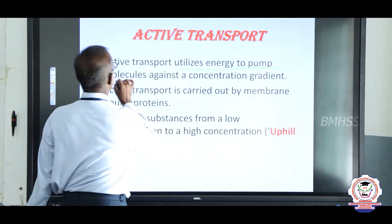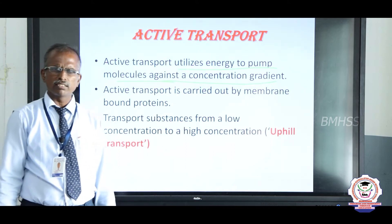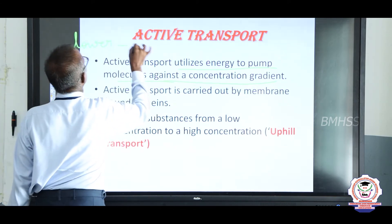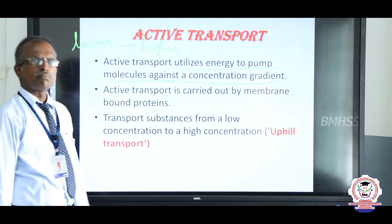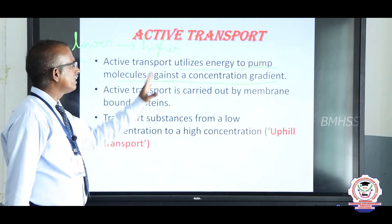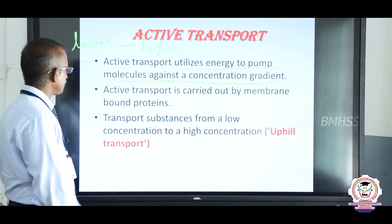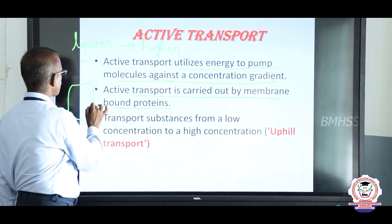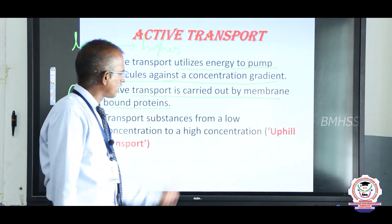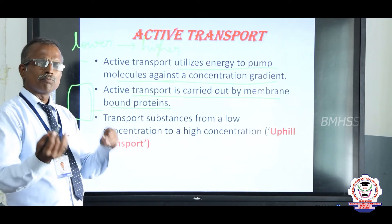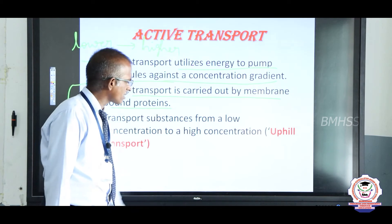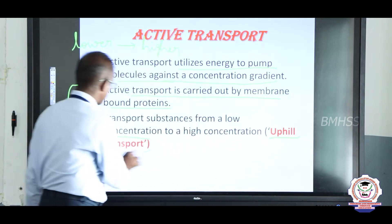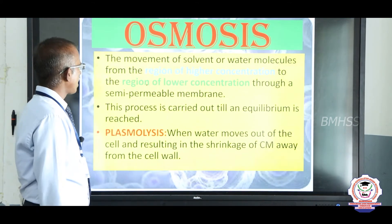Active transport utilizes energy to pump molecules against the concentration gradient. Against the concentration gradient means opposite to normal — from lower concentration to higher concentration. Here, expenditure of energy is very important. Active transport is carried out by membrane-bound proteins. These protein molecules allow substances to move from lower concentration to higher concentration. This is also called uphill transport.